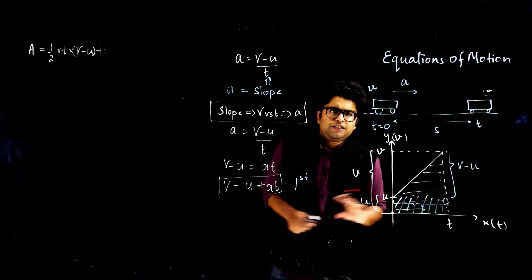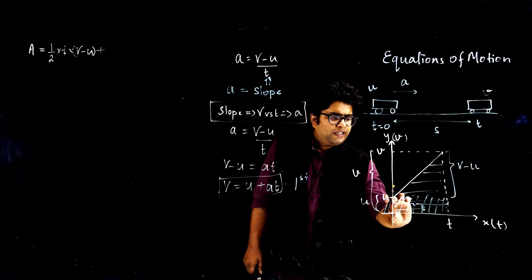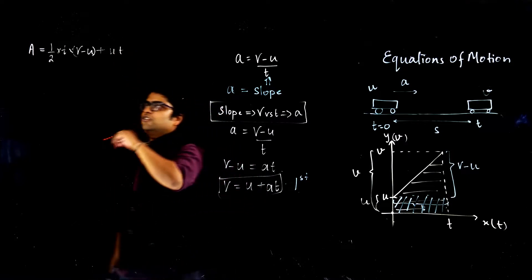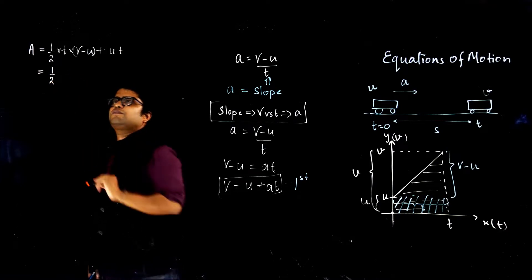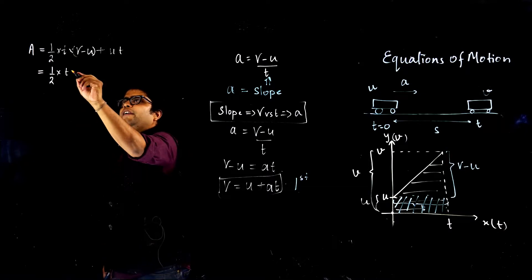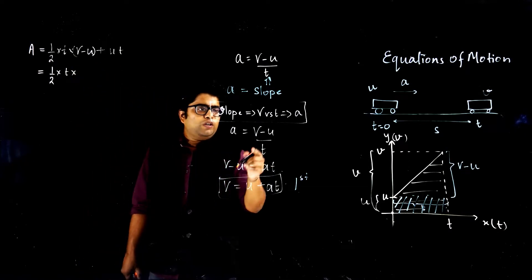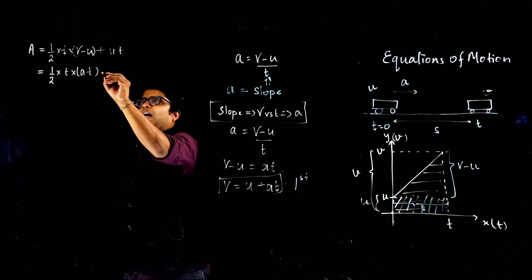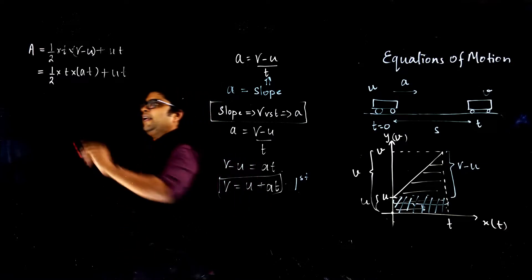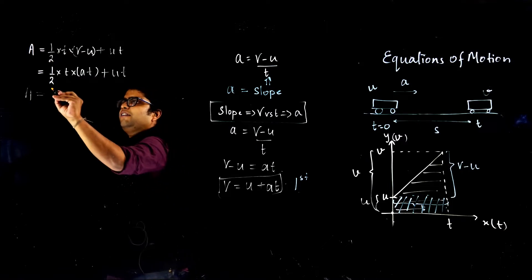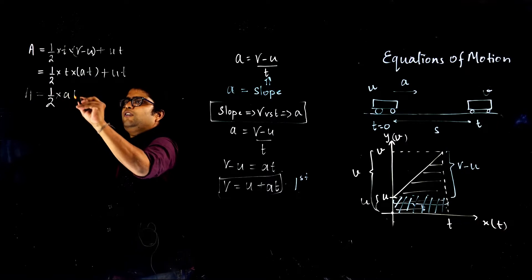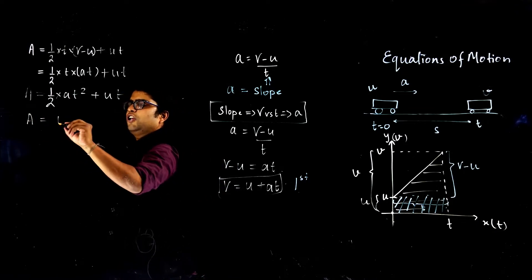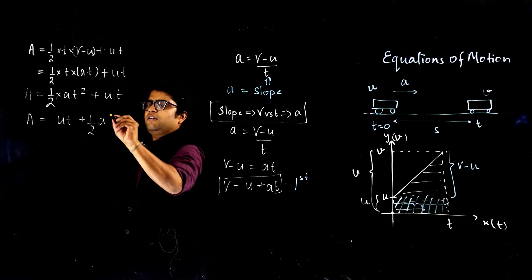Plus the area of the rectangle, which is length times breadth: t times u. So total area = ½ × t × (v − u) + u × t. Now v − u can be written as a times t from our earlier result. So area = ½ × t × at + ut = ½at² + ut.